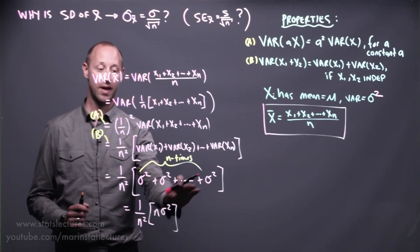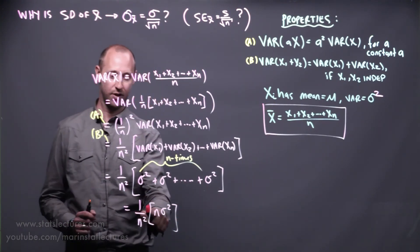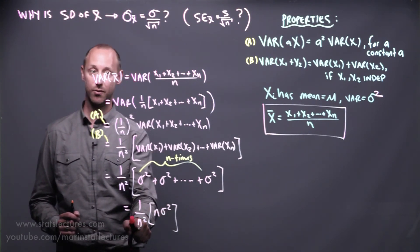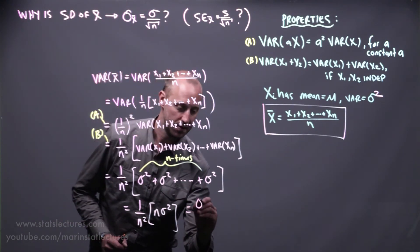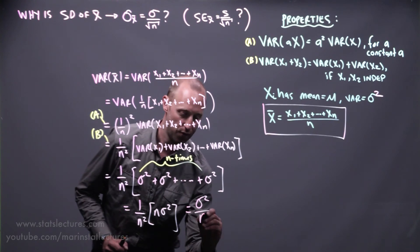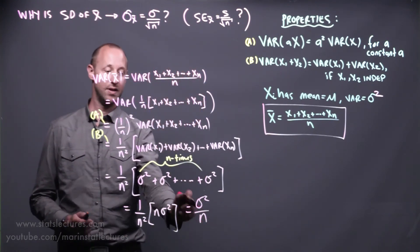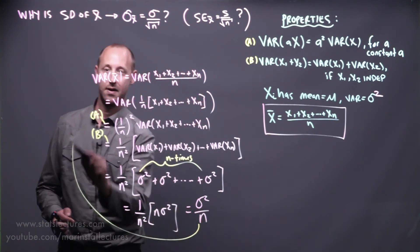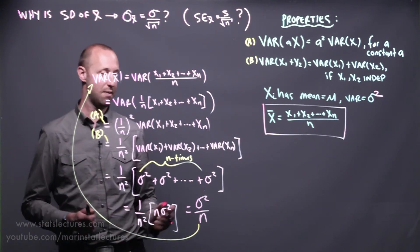If we have sigma squared appearing n times, that's n sigma squared. You'll notice n is going to cancel out with one of these here. Sigma squared over n. Again, a reminder, this here is the variance of the sample mean.